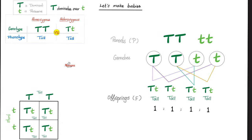The first parent is capital T, capital T — dominant and homozygous. The second parent is small t, small t — recessive and homozygous. Now let's match. You take the first one from here with the first one from here, then the first from here with the second from here, and do the same with the second gamete. As you see, all of them are heterozygous. But since capital T dominates over small t, all of them are tall individuals — 100% of the offspring will be tall, like the dominant parent. If you don't want to do it this way, you can use the Punnett square.